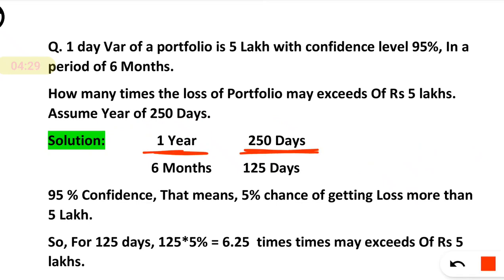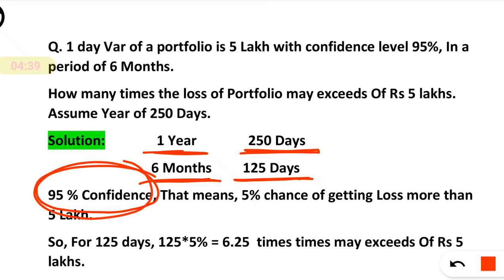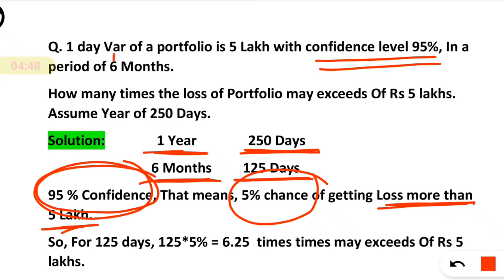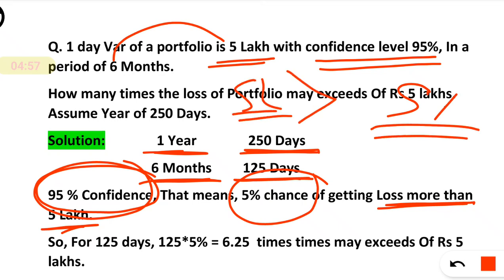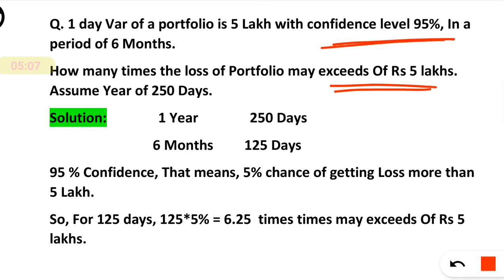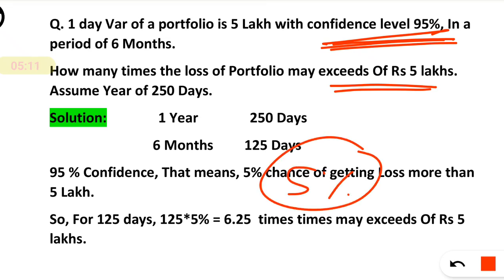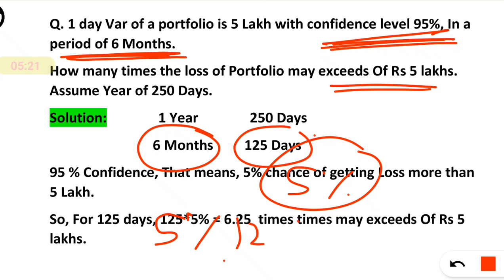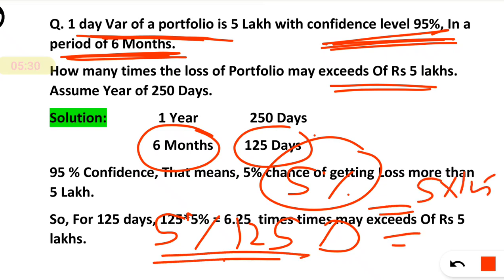95% we are having confidence means that 5% there is a chance of getting loss more than 5 lakh. We are having confidence that value at risk will limit to 5 lakh — that simply implies 5% we are not confident that it will go beyond 5 lakh. Since they are asking when it will be more than 5 lakh, we have to consider the non-confidence level — that is 5%. For 6 months, that is 125 days, 5% of 125 gives around 6.25, so we can roughly say 6 times.